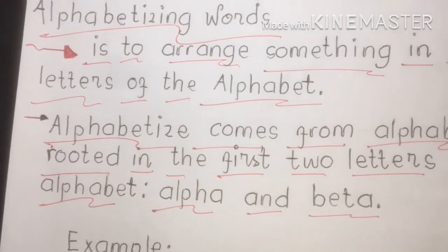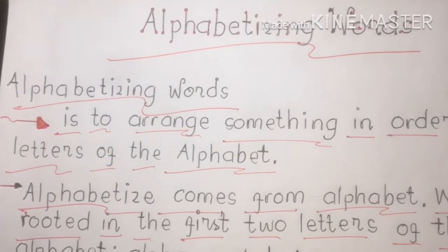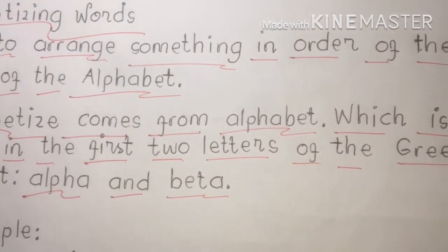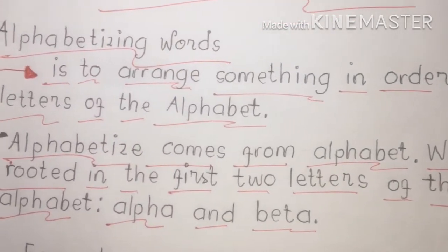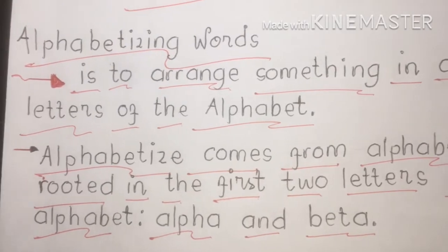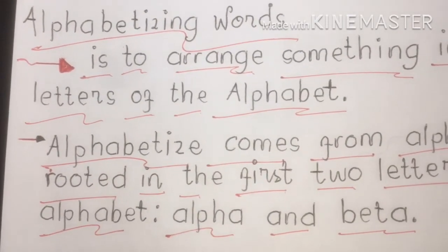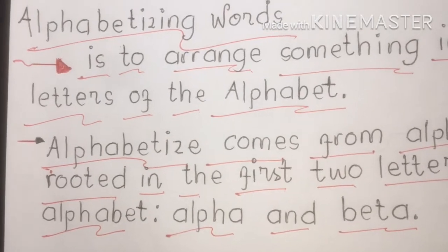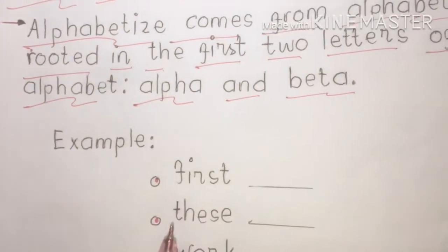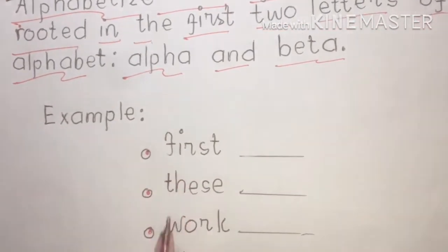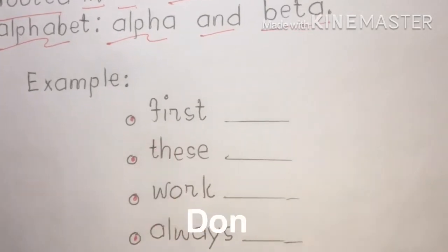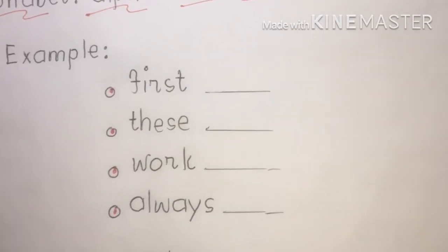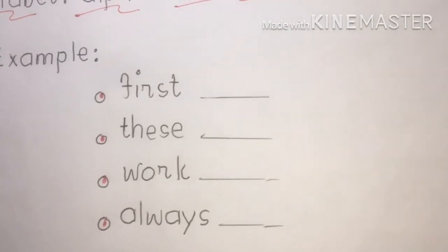Here is our example of how we are going to arrange words from A to Z. Remember, you have to memorize the alphabet from A to Z. To avoid mistakes, read each word carefully and check the first letter. If the first letters are the same, proceed to the second; if still the same, proceed to the third. The rules in alphabetizing use only the first, second, and third letters of each word.